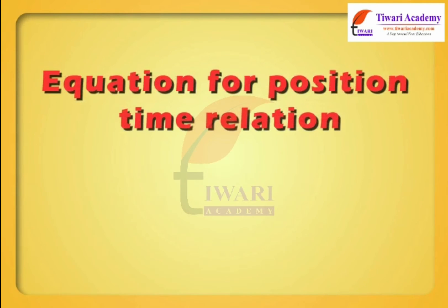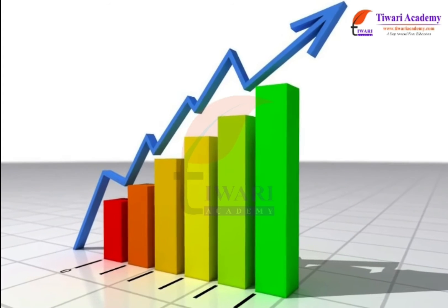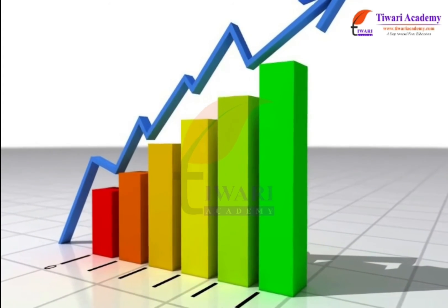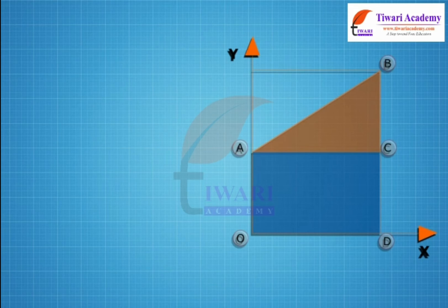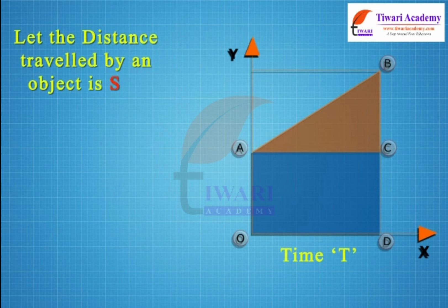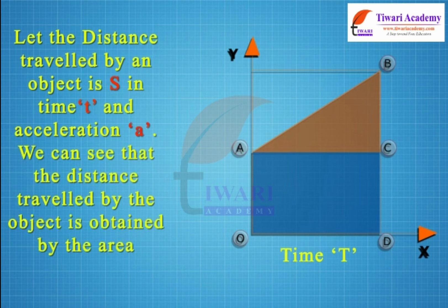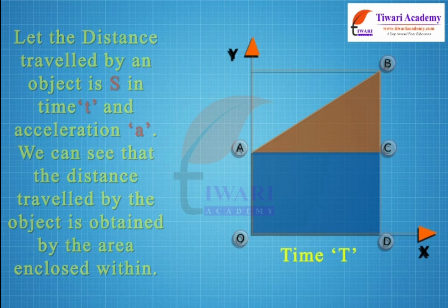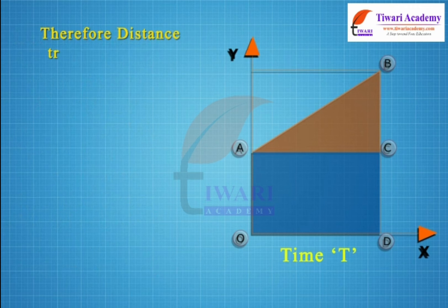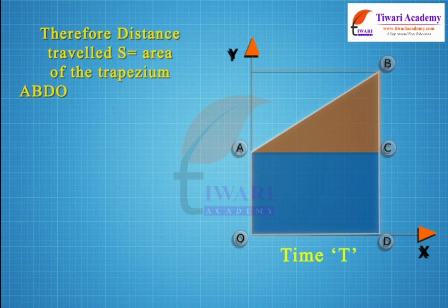Equation for position-time relation. Dear students, we use position versus time graphs to describe motion. Let the distance traveled by an object be s, in time t, with acceleration a. We can see that the distance traveled by the object is obtained by the area enclosed within the graph. Therefore, distance traveled s = Area of the trapezium ABDO.